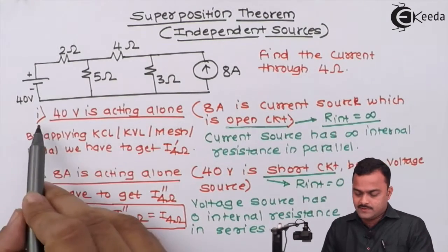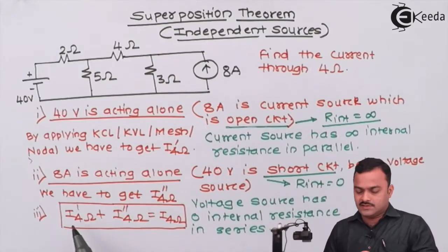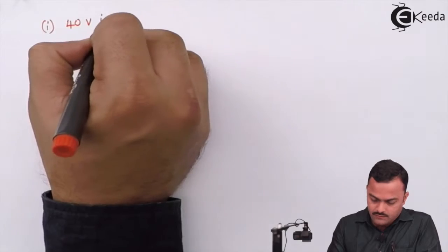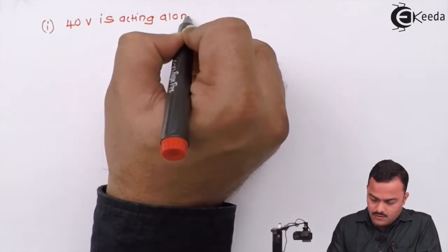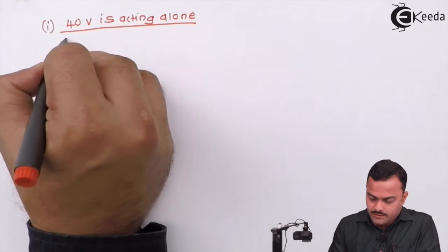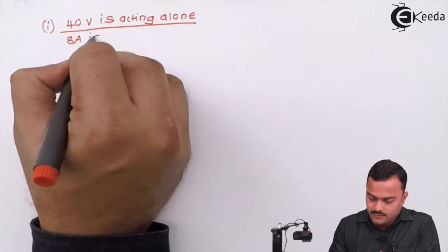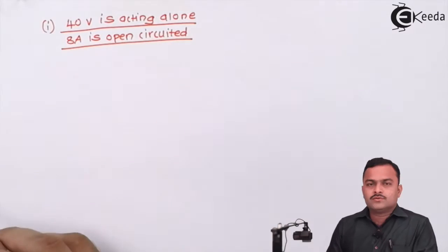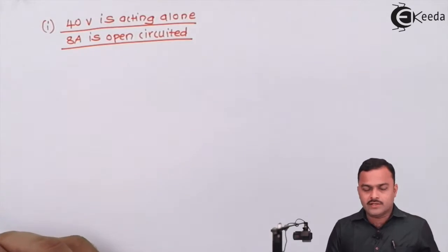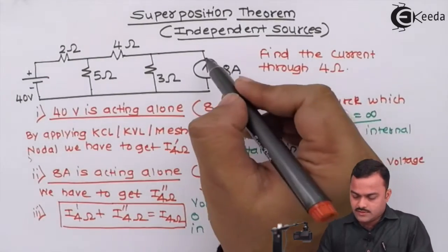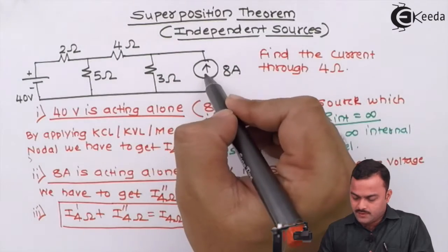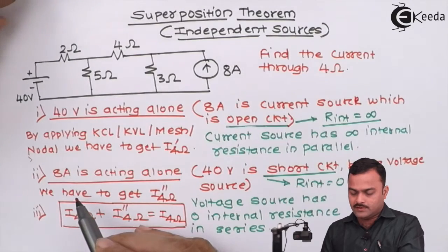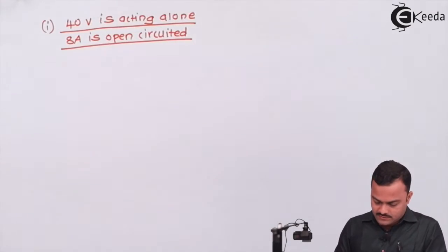Now let's apply the theory to the problem. With 40 volts acting alone, the 8 ampere current source is open-circuited. Since the current source is open, there is no meaning for that branch wire, so we get a simplified circuit. The open circuit eliminates one loop, and we are left with a simple two-loop circuit which we need to redraw.